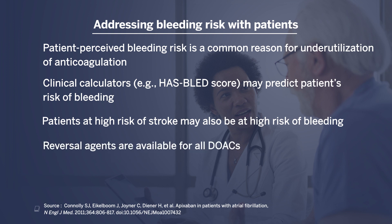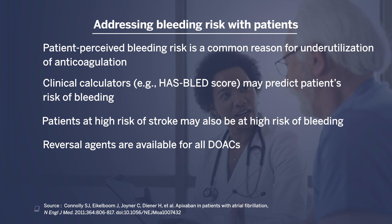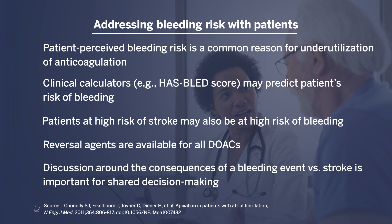It's important for patients to know that there are reversal agents available now for all direct oral anticoagulants, so that if there is a bleeding problem, the medication can be reversed. Part of the discussion has to be around the consequences of a bleeding event versus a stroke, because that's an important concept for the patient to make an informed decision. For instance, the long-term health consequences of a GI bleed are very different from those of an embolic stroke.